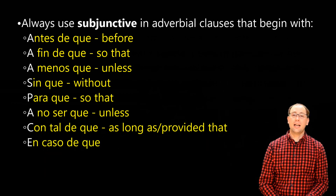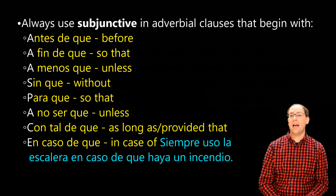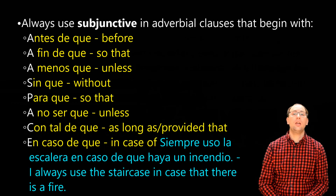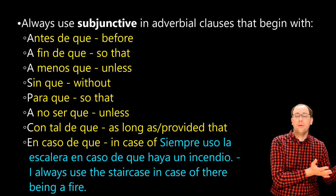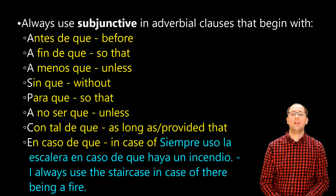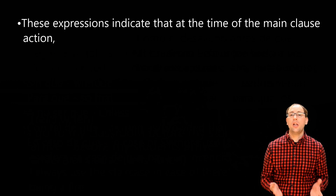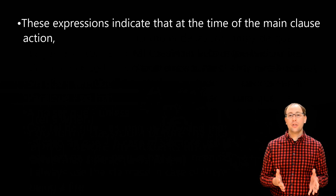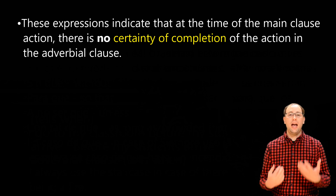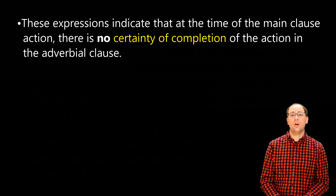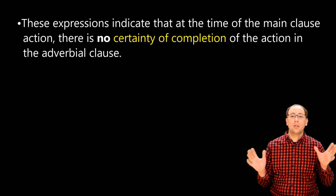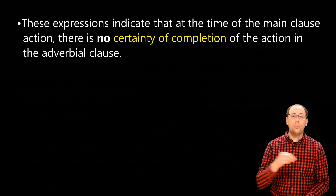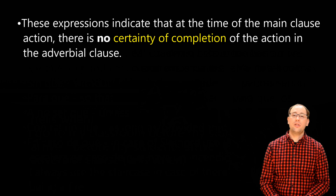The last one is 'en caso de que,' meaning 'in case of.' We can see that in the example: 'Siempre uso la escalera en caso de que haya un incendio' — I always use the staircase in case there is a fire. When I'm using the staircase, I have no certainty of there being a fire, so it must be subjunctive. These expressions all indicate that at the time of the action in the main clause, there is no certainty of completion of the verb in the subordinate clause — that's why all of these use el presente de subjuntivo. Remember: AAA space. Muchas gracias por ver este video. ¡Adiós!